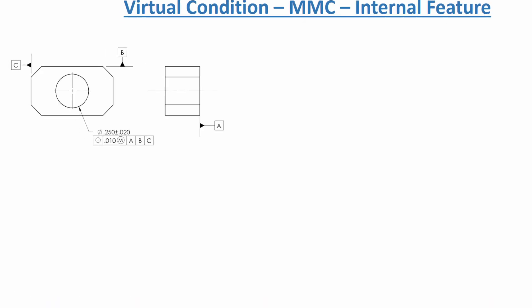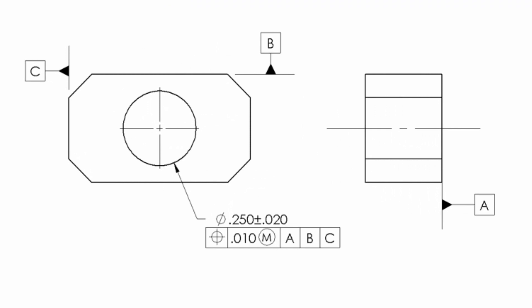Let's go over the virtual condition formulas for maximum material condition so that you can understand how to calculate it on your own. Let's start with the max material condition of an internal feature. Here we have the same part that we had in our first video on envelopes, however now we've added the max material condition modifier.